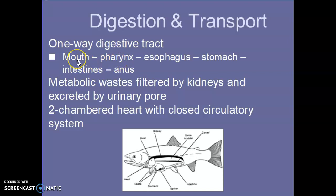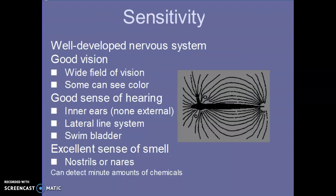So digestion — they have a one-way digestive tract just like we do. It starts from the mouth, esophagus, stomach, intestines, anus, and out — meaning it goes in one way and out a different way on one tract. They have kidneys just like we do. Their heart, like all fish, is two-chambered, which means it has one atrium and one ventricle, where ours is four-chambered with two in each. And they have a closed circulatory system, meaning all of their blood is kept in veins and arteries, just like us.